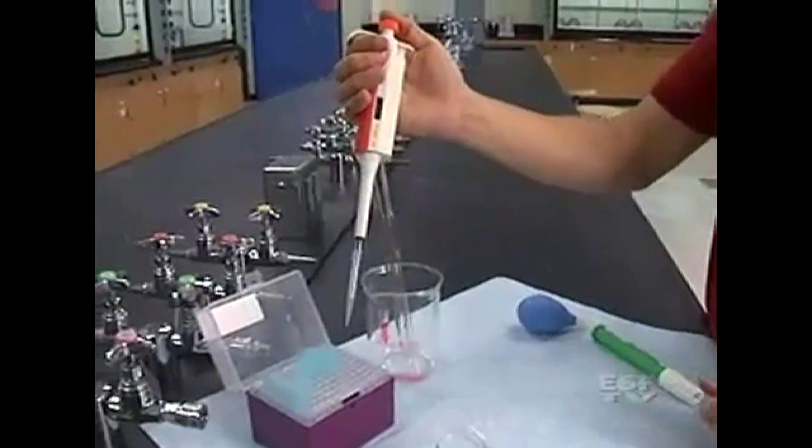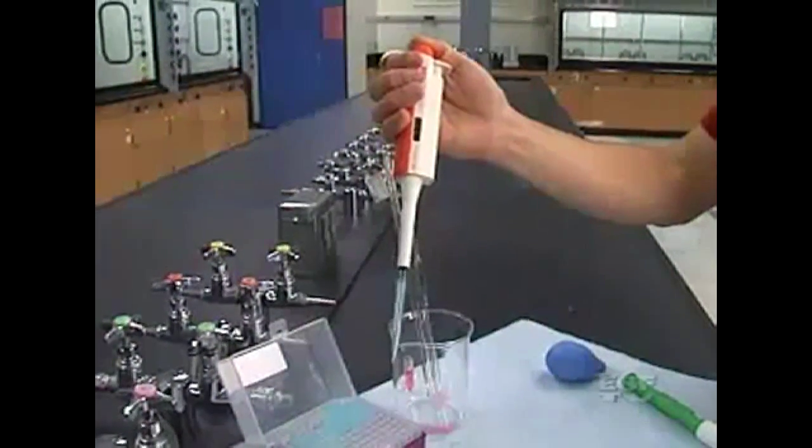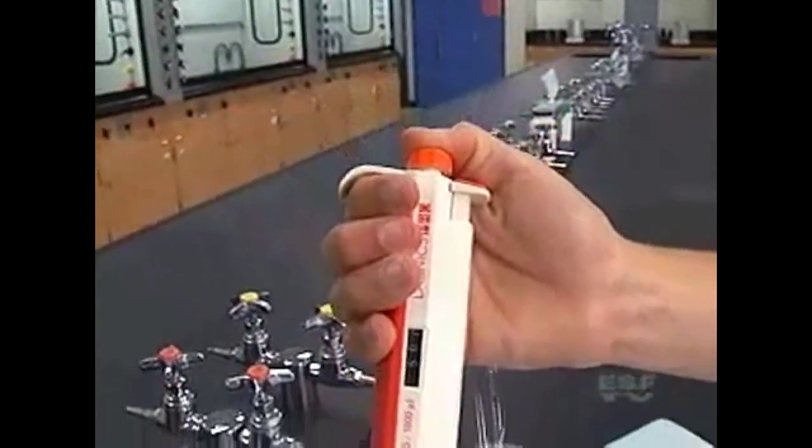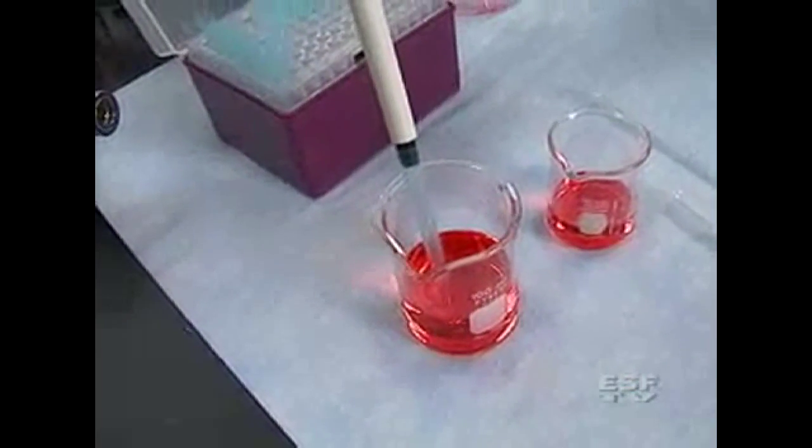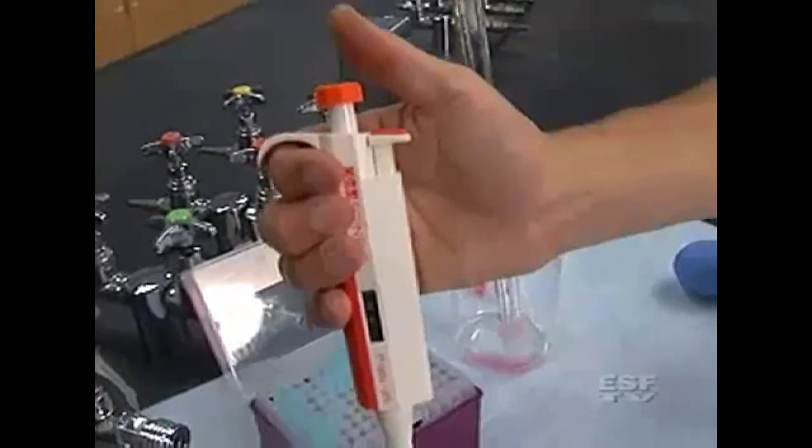I'm going to press down on the lever and what you'll notice is there is going to be one stop and you want to go to that first stop and just push down lightly and then put your tip into the solution and as you withdraw that put it in solution you withdraw the knob slowly and you'll see that we've picked up exactly 500 microliters of solution.